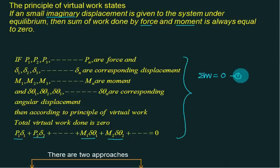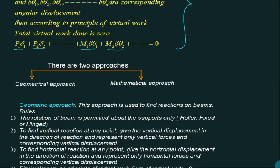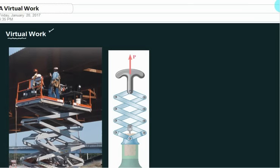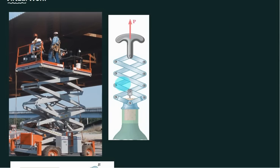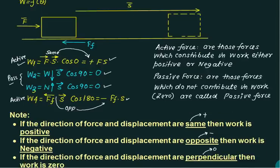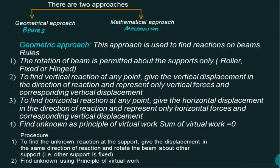Using this single equation you solve the problem. Two types of problems appear in virtual work: one approach is the geometrical approach and the other is the mathematical approach. The mathematical approach is used for mechanism problems — complex linkage mechanisms. The geometrical approach can be used for simpler beam problems. Both types can be solved using the method of virtual work.